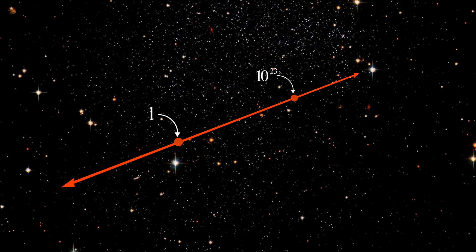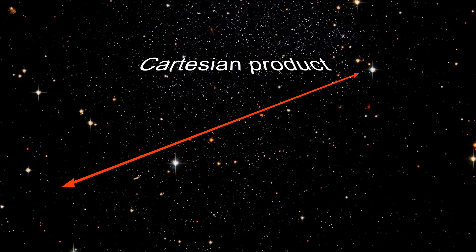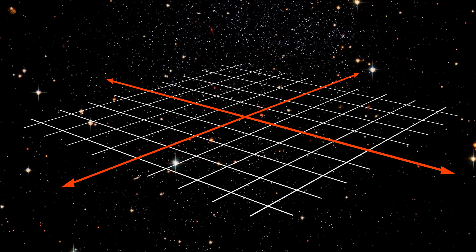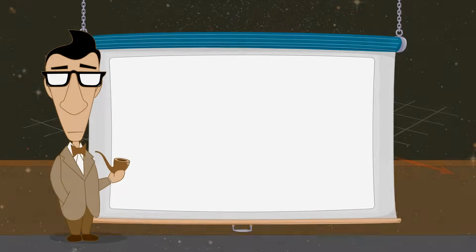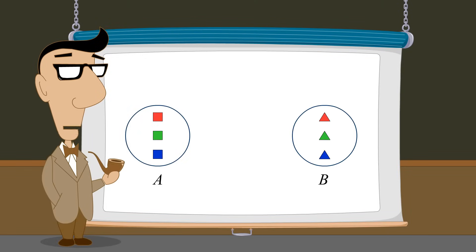In the previous lecture, we discussed the operation of creating a Cartesian product. In this lecture, we will see how the Cartesian product allows us to construct mathematical objects which correspond to points in two or more dimensions. As we saw in the last lecture, the Cartesian product of two sets A and B is formed by pairing one element from each set to form ordered pairs.